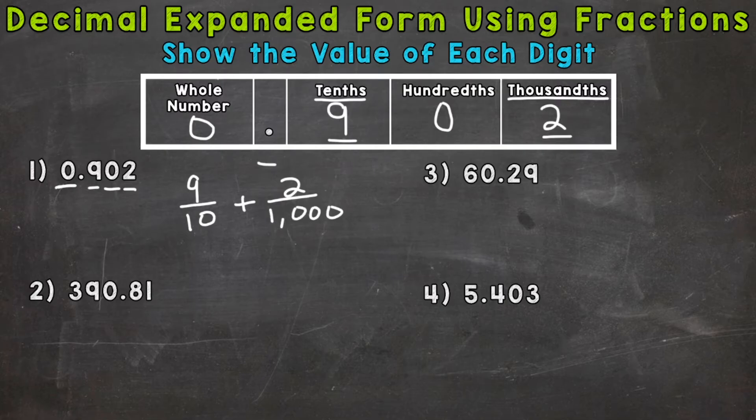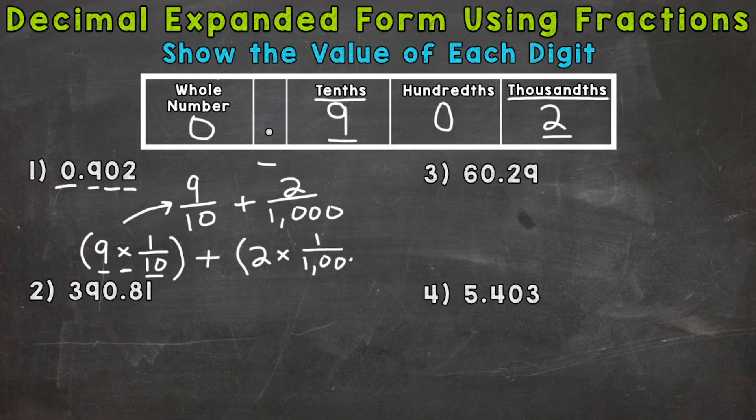The second way involves parentheses. This is what I call the parentheses method. So we would have a nine in the tenths place. That's how I like to say it and think of it, but it's nine times a tenth, which equals nine tenths, plus a two in the thousandths place. But what it really means here is two times one thousandth, and that equals that right there.